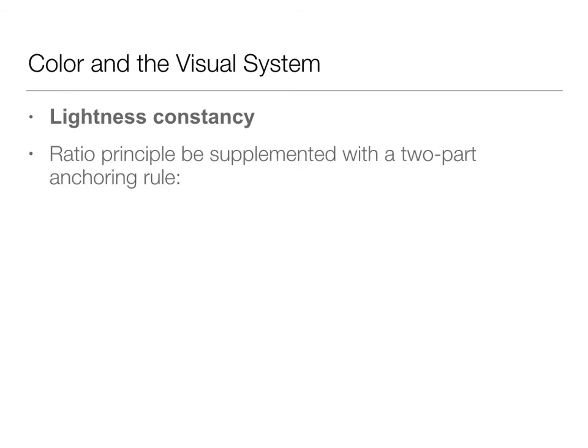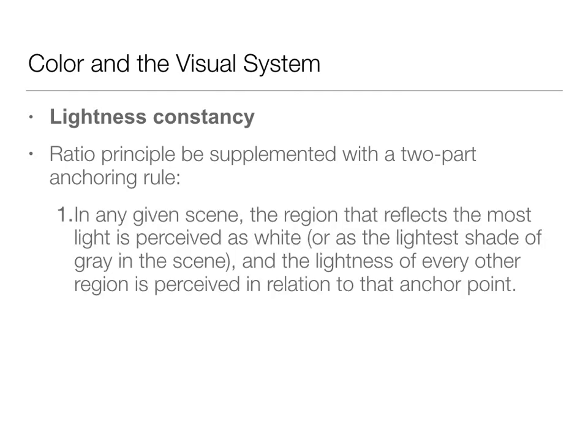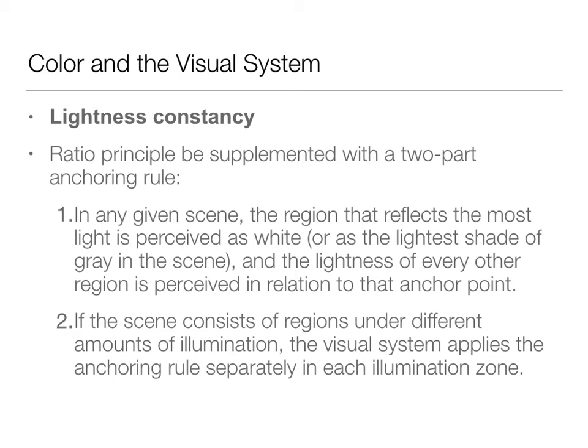This operates on a ratio principle with a two-part anchoring rule. The first part is that in any given scene, the part that reflects the most light is seen as white — so the part reflecting the most light is perceived as white or the lightest shade of gray, and everything else is in relation to that anchor point. The second part is that when the scene consists of regions under different amounts of illumination, the system applies this anchoring rule separately to each illuminated region. This is how we saw A and C as different colors even though they were the same, because there was shading on A and not on C.